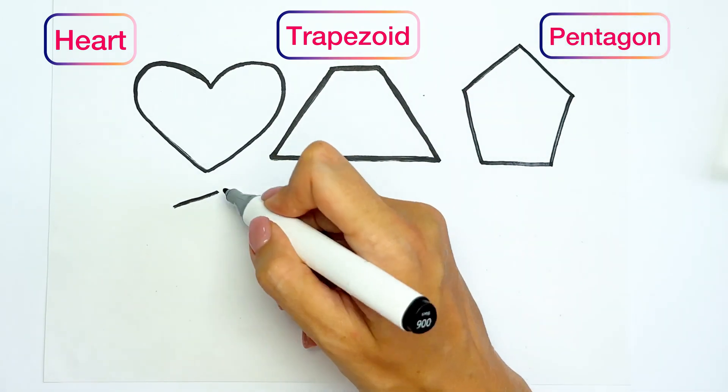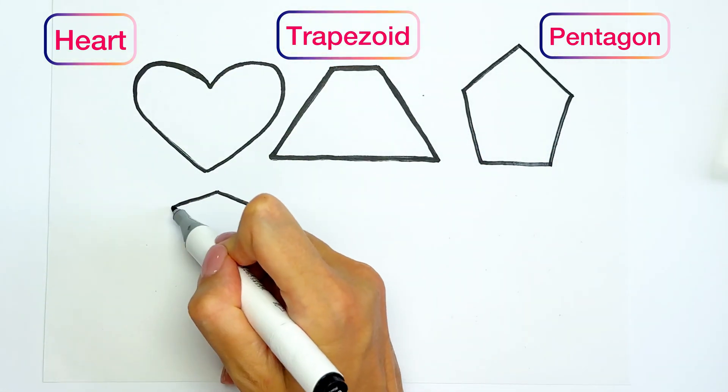The next one is nonagon. Nonagon has nine angles.